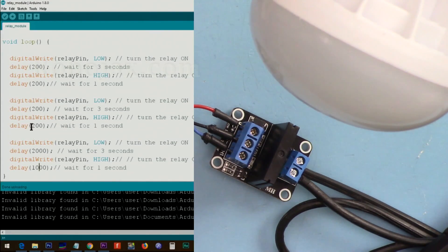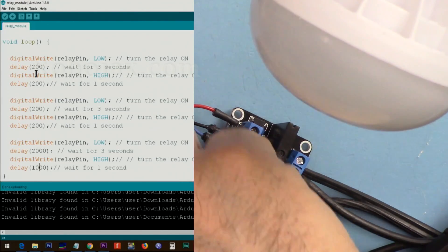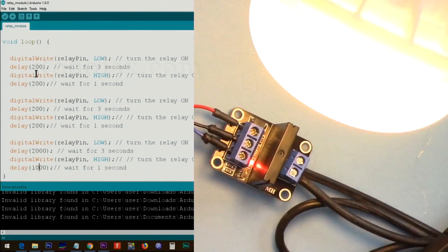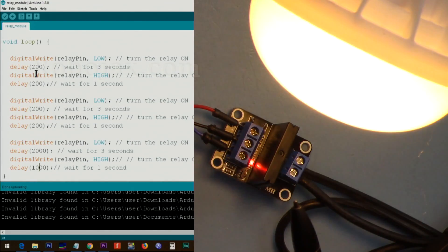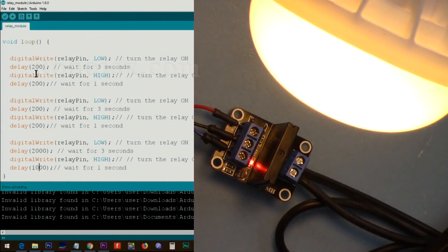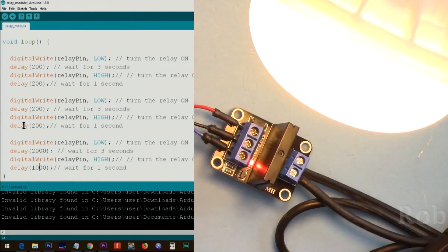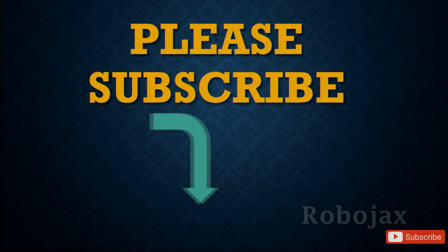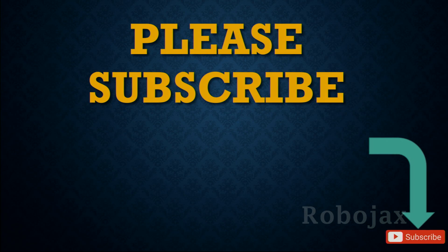So this will make two quick blinks, one long blink, and then comes back. Two quick, one long. And you can play with this whatever way you want it to be turned on and off. Please make sure to subscribe by clicking at the subscribe button.